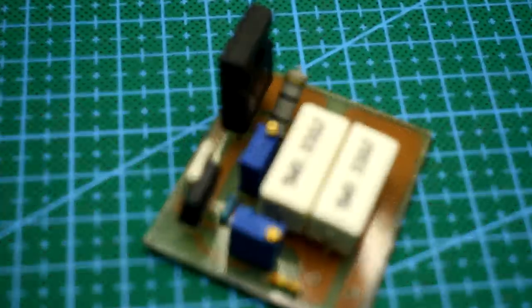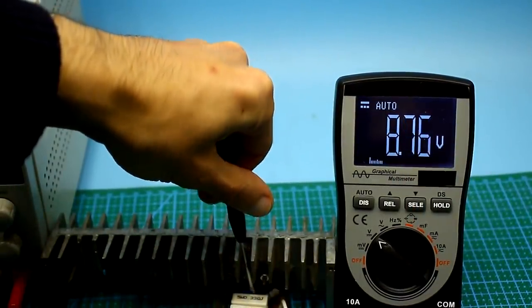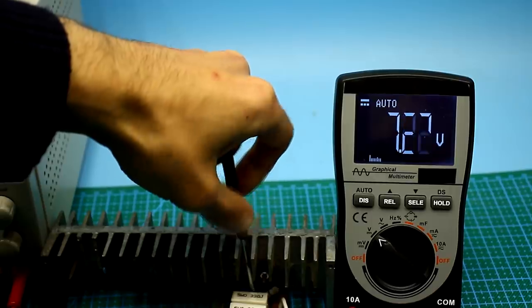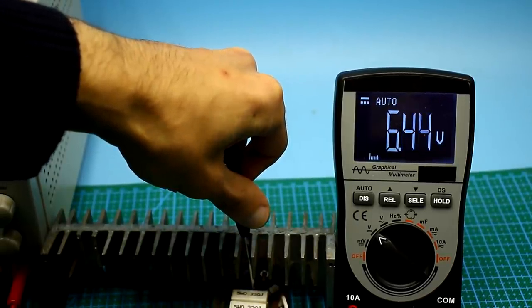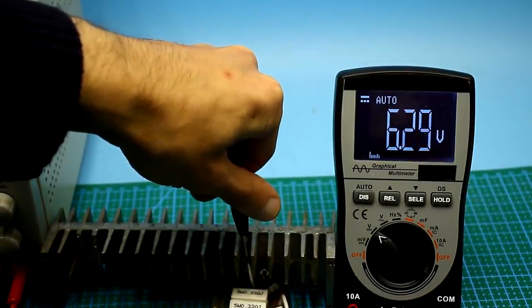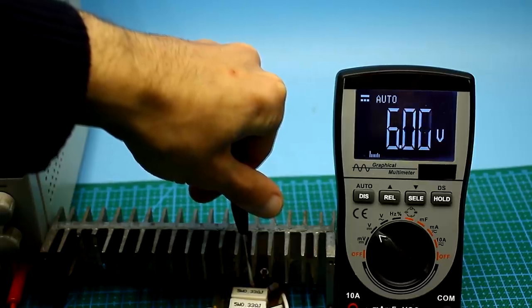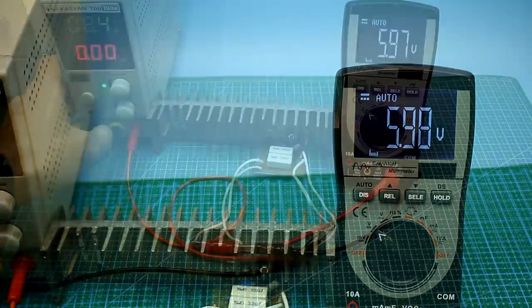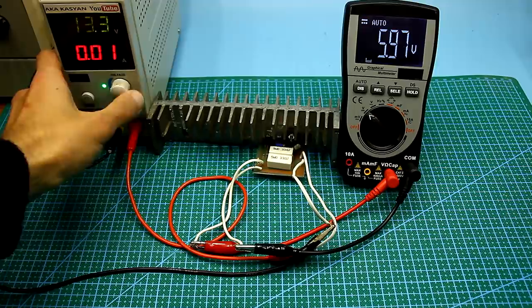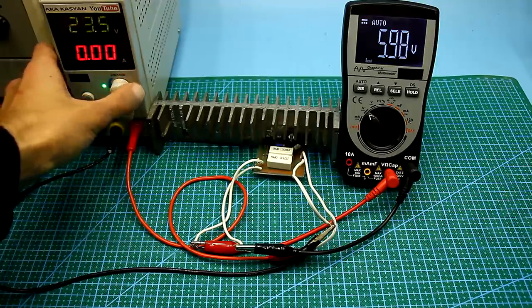Now, a few tests. Test number 1: We check the voltage stabilization function. A constant voltage is applied to the input of the unit. At the output I set 6V. Will the output voltage change when the input voltage changes? As you can see, stabilization works.